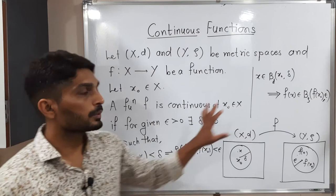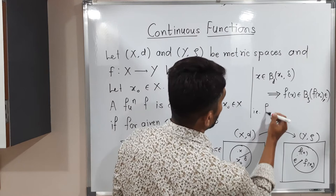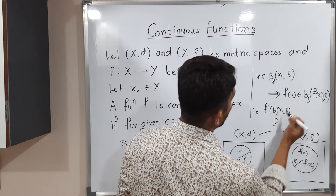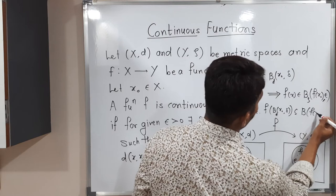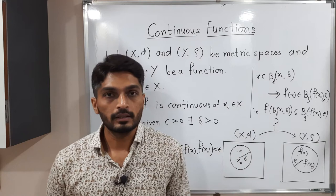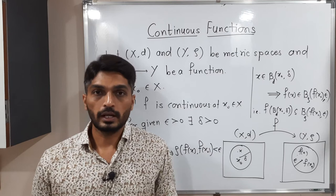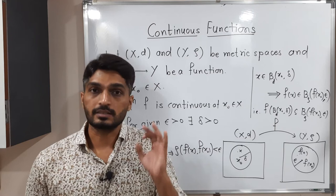There is one more equivalent way to write the same definition: the image of the open ball with center x₀ and radius delta is a subset of the open ball with center F(x₀) and radius epsilon in ρ. All three formulations have the same meaning; only the way of writing is different. As per the requirement we will use one of these three definitions.